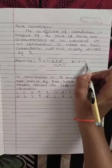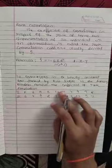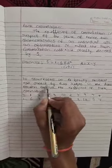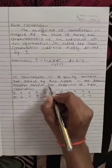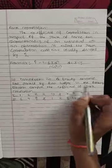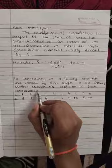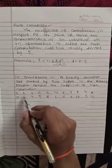We will understand this concept by taking one example. The question is: 10 competitors in a beauty contest are ranked by two judges in the following order. Compute the coefficient of rank correlation.